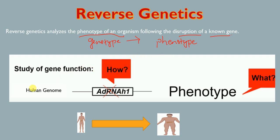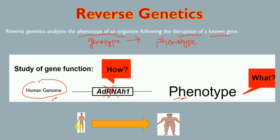For example, let's say we have the human genome and there is one gene known as ADRNAH1. If we delete this particular gene from the human genome and observe the phenotype, that is reverse genetics. We are selecting the gene, deleting it from the genome, and then observing the phenotype. This individual here appears lean and thin.